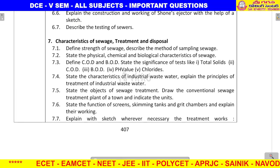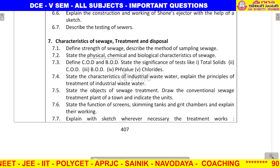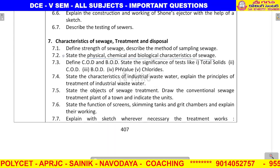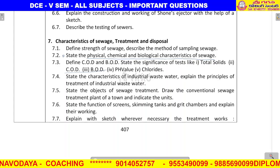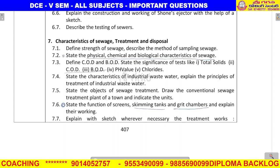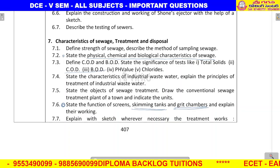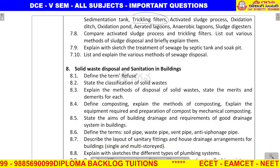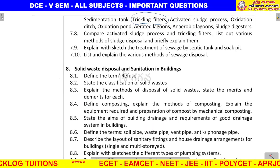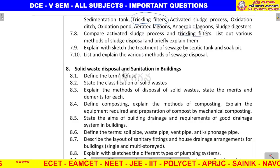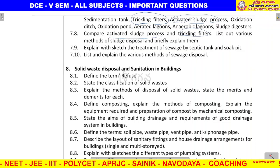Characteristics of sewage treatment and disposal — very very important. First important question: state the physical, chemical, and biological characteristics of sewage. Next, COD and BOD — three marks. Functions of screens, skimming tanks, and grit chamber — important. Trickling filters — very very important, appears frequently. Activated sludge process — very important. Trickling filters and activated sludge processes are both very important.